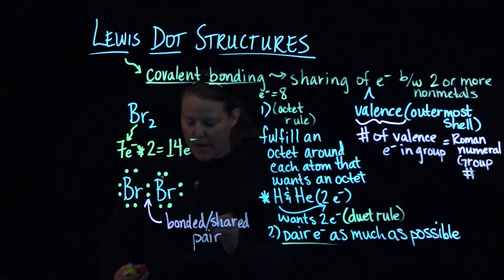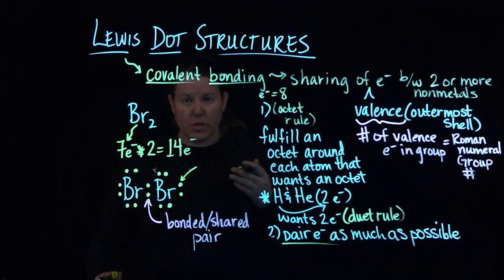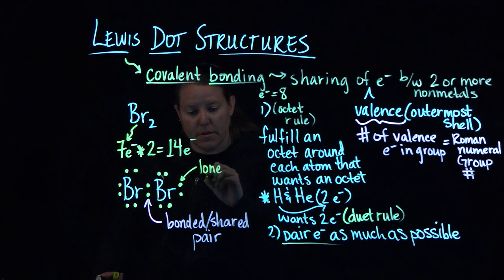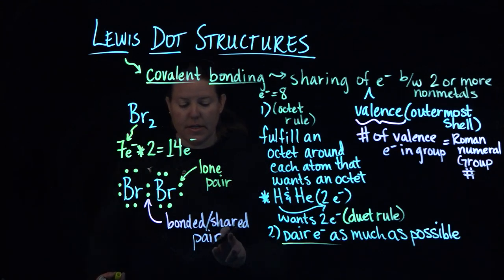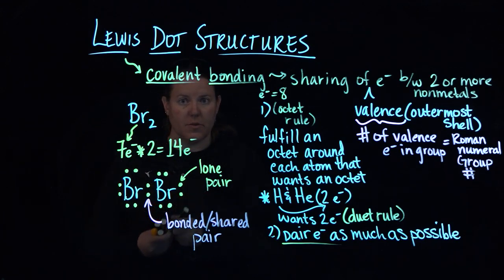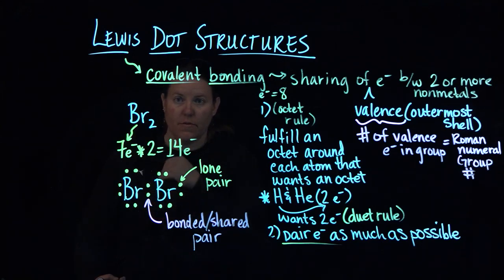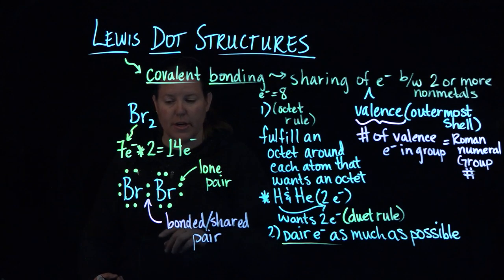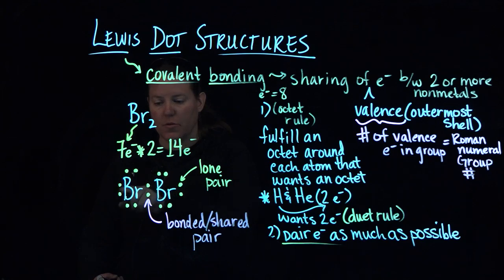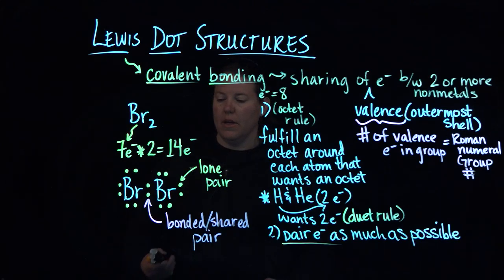And all of these electrons that are alone, in other words not between two elemental symbols, are called lone pairs. And that bonded and shared pair counts for two electrons for that Br and for that Br. Then how many valence electrons do I have around this Br? I have two, four, six, eight. And how many do I have around this Br? Two, four, six, eight. So I've fulfilled the octet rule for both of those. If I count up my total number of valence electrons in the end, just to double check, I just count this shared pair once. I have two, four, six, eight, ten, twelve, fourteen. That's an awesome Lewis dot structure.